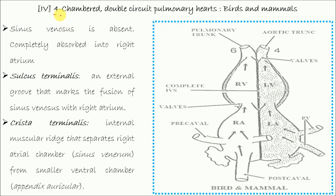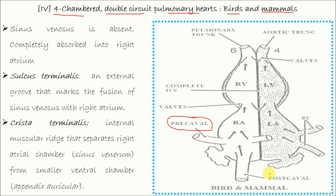The four-chambered double circuit pulmonary heart is found in birds and mammals. Both the inter-atrial septum and interventricular septum are complete. There is no sinus venosus — it is completely absorbed into the right atrium, which takes over its pacemaker function. The right atrium receives blood through the precaval and postcaval veins and opens into the right ventricle through the right atrioventricular aperture.